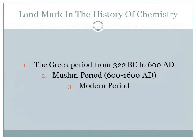Now we start to go in depth. In the history of chemistry, the periods of progress of chemistry are: the Greek period from 322 BC to 680, the Muslim period from 600 to 1600, and the Modern period.